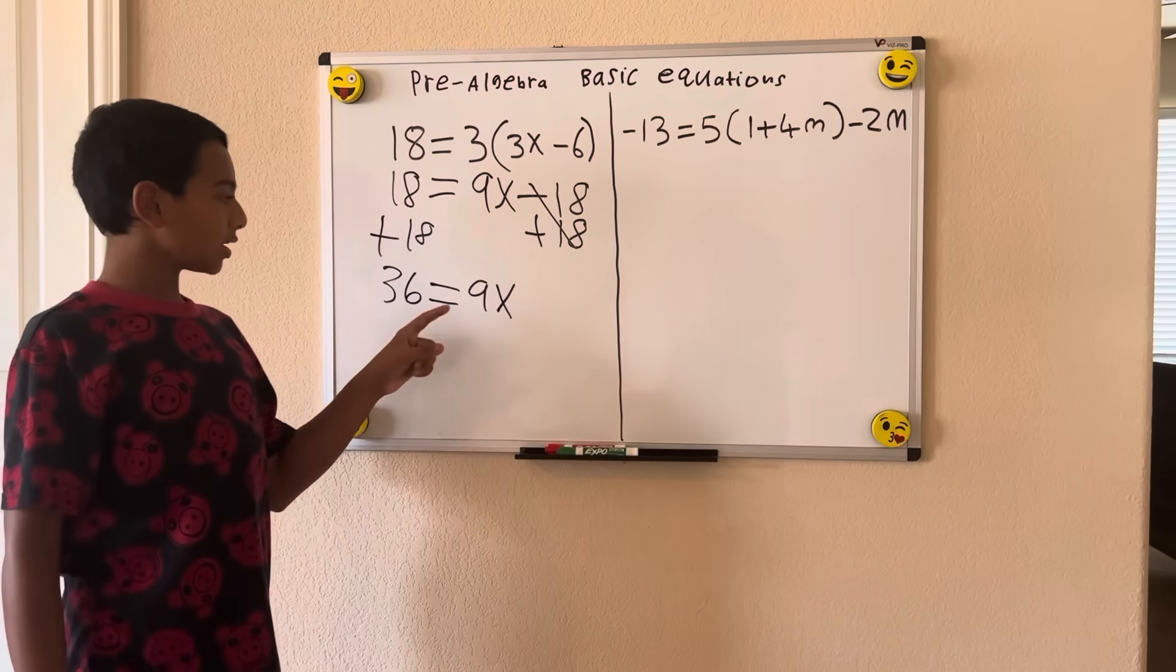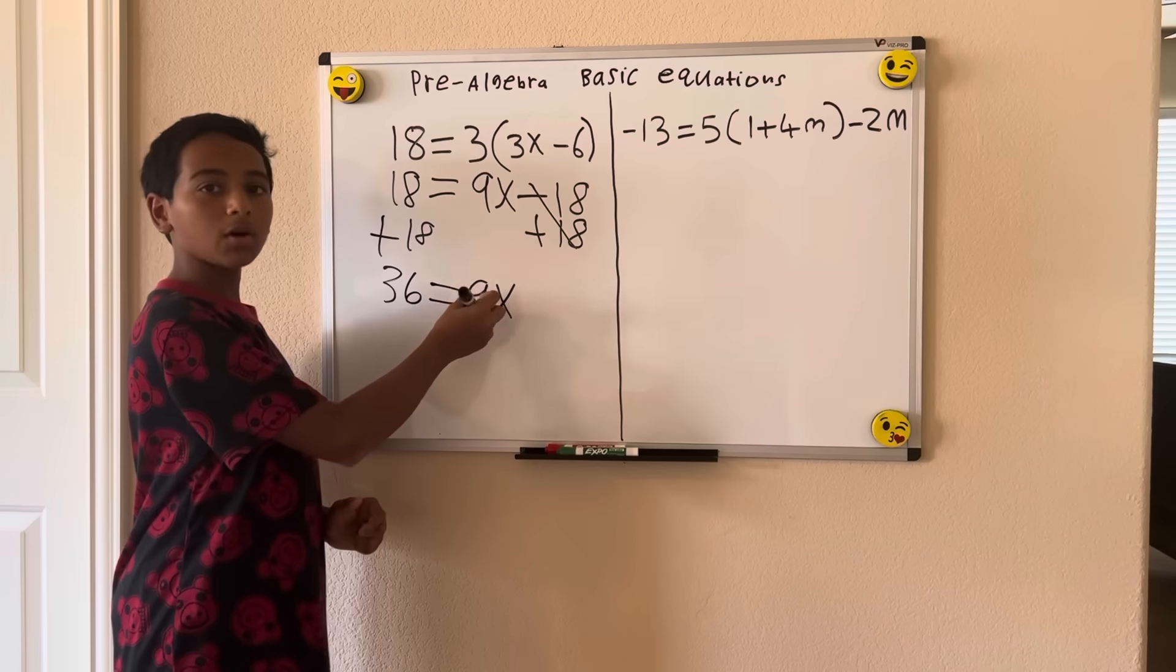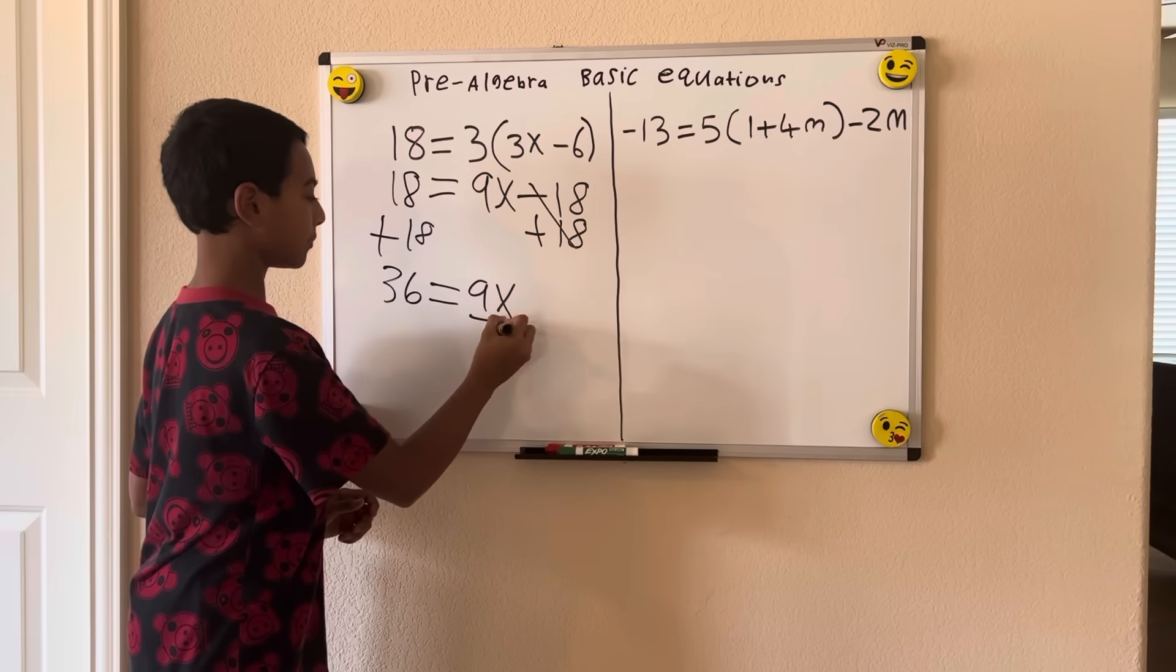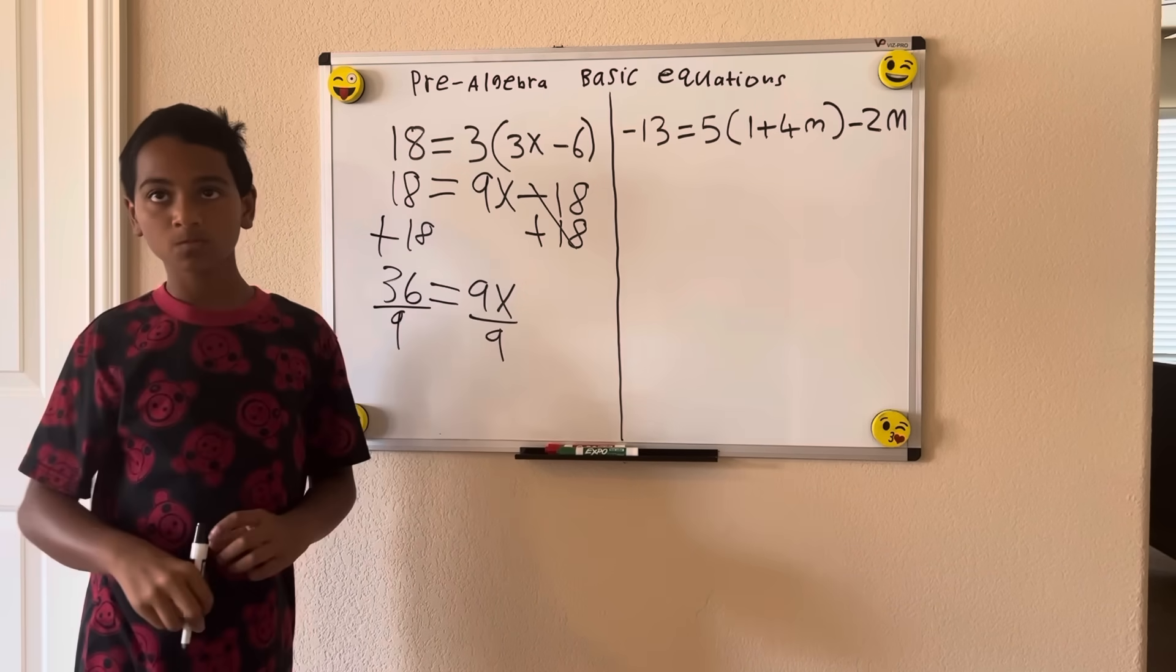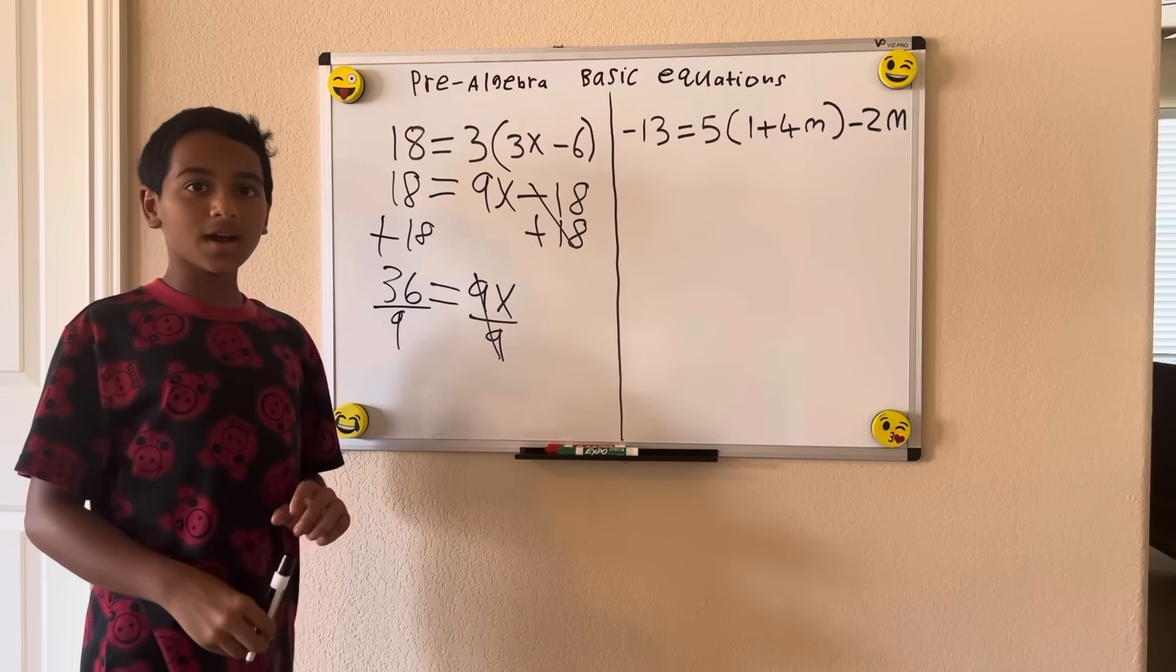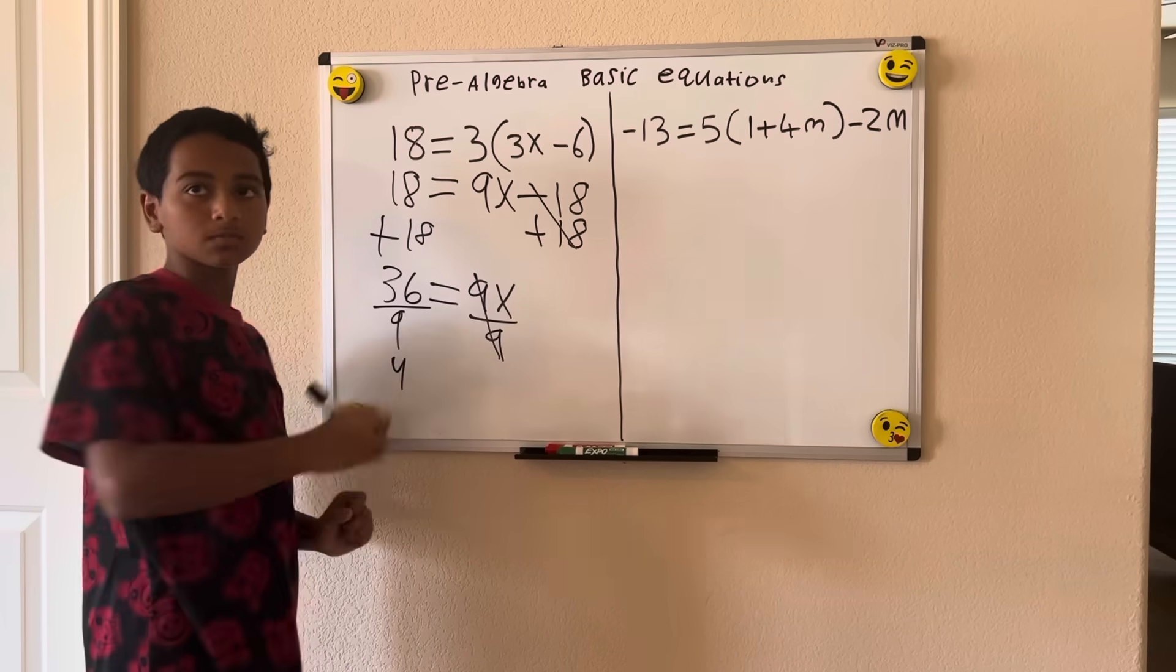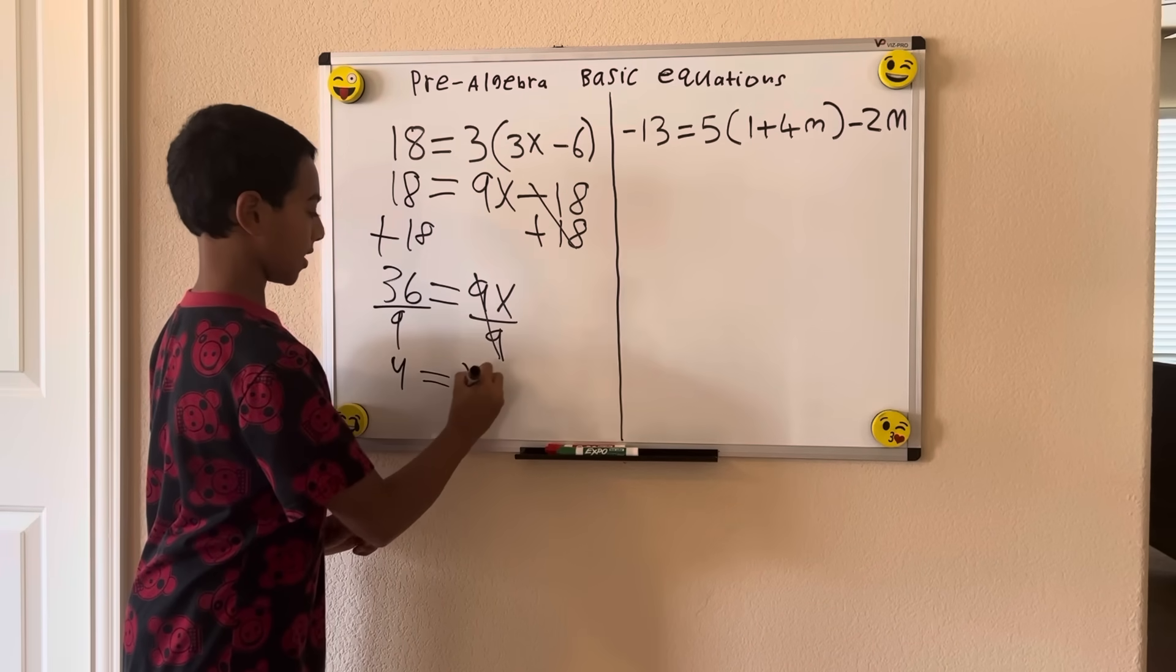Now, how would you isolate x? Well, the 9 is being multiplied by this x right here. So to isolate, we're going to divide both sides by 9. 9 divided by 9 is 1 and it cancels out. Now, 36 divided by 9 is 4. So 4 is equal to x.